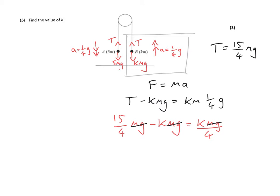If I rearrange this, I move the K to the other side, so add K to K over 4. I'm going to leave 15 over 4 on its own. And so K plus K over 4 is 5K over 4.